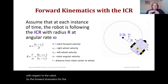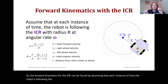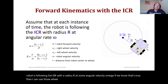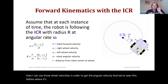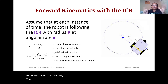If we know the robot is following the ICR with radius R at angular velocity omega, we can use the wheel velocities to obtain that angular velocity. We've seen this before: omega equals the velocity of the right wheel minus the left wheel divided by 2L.